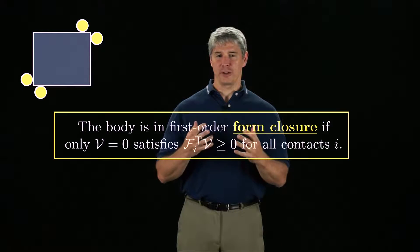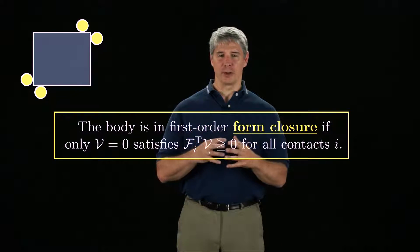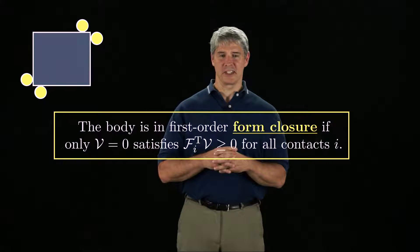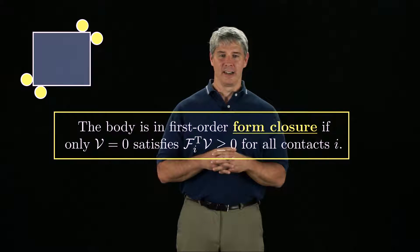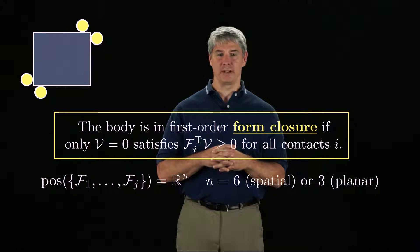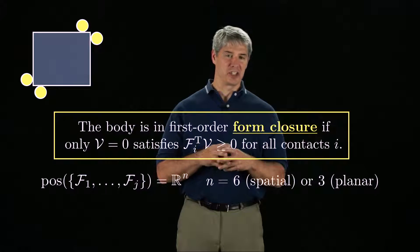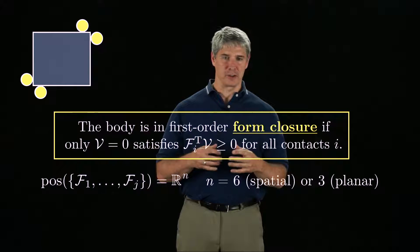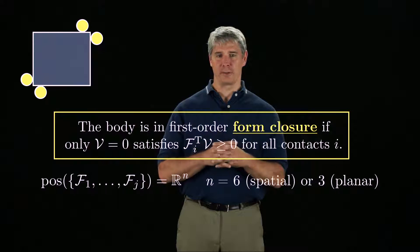If a rigid body is fully immobilized by a set of rigid stationary fixtures, we say it is in form closure. In particular, first-order form closure means that only the zero twist satisfies the impenetrability constraints for all the contacts. This condition is equivalent to the condition that the positive linear span of the contact normal wrenches is the entire wrench space, which is six-dimensional for spatial bodies and three-dimensional for planar bodies.